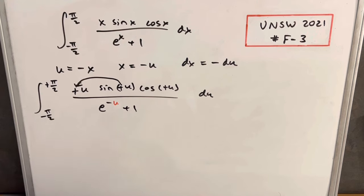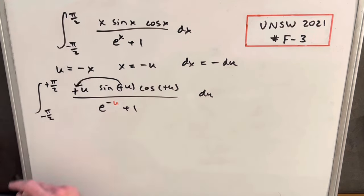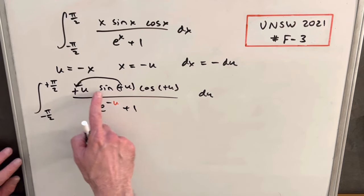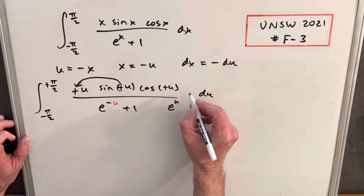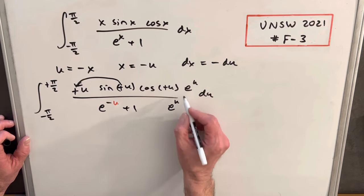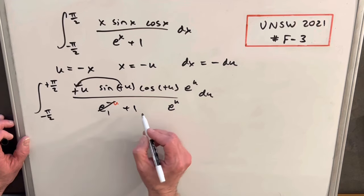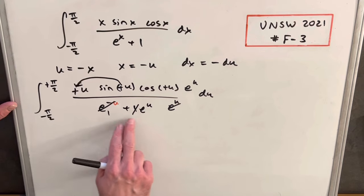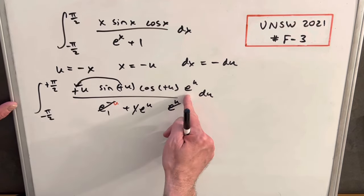One more thing I want to do before we continue. I'm trying to get this to look as much like our first integral as possible. The numerator is basically the same thing, just in u. The denominator is a little different, but we can fix that by multiplying through numerator and denominator by e to the u. Then this term will become 1, and this term will become e to the u. By doing that, now we have the same denominator except in u, and we just have this extra e to the u term.